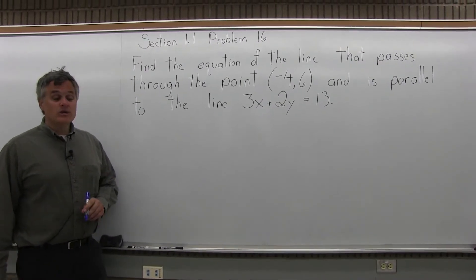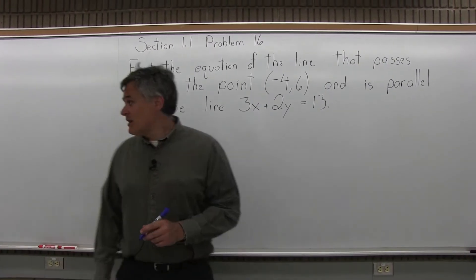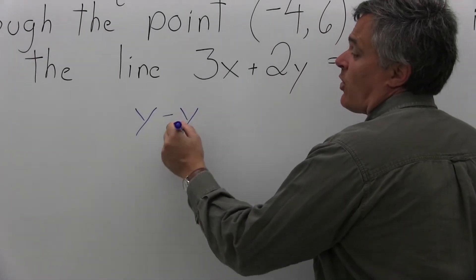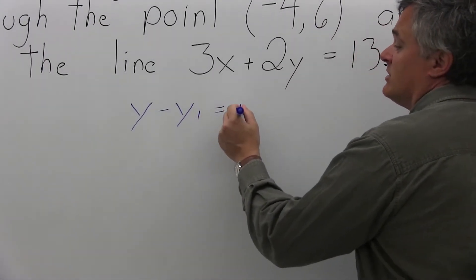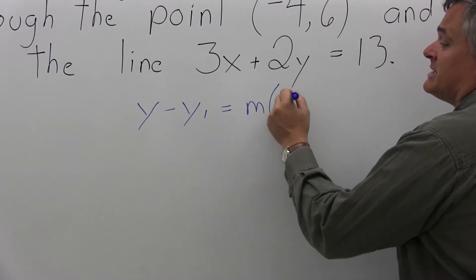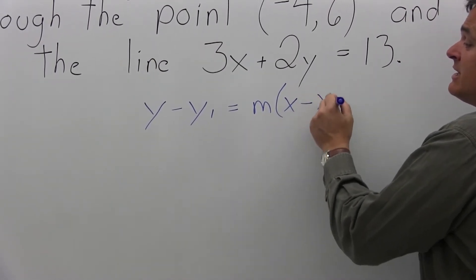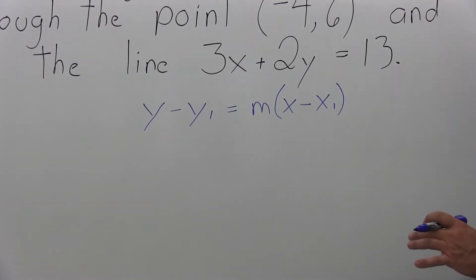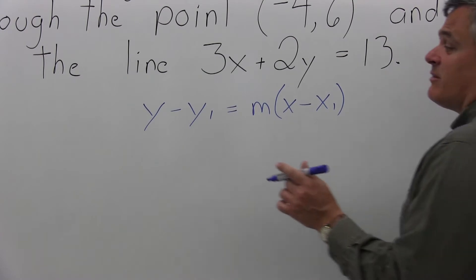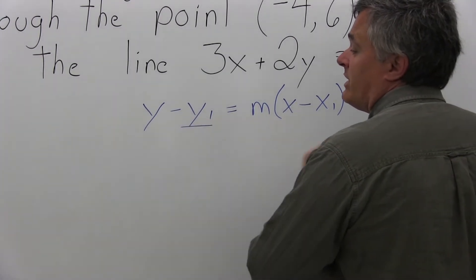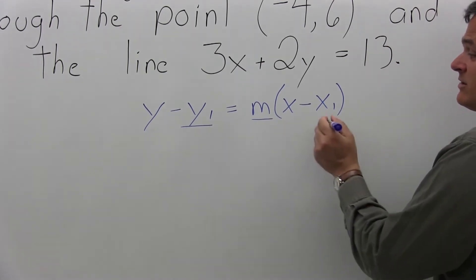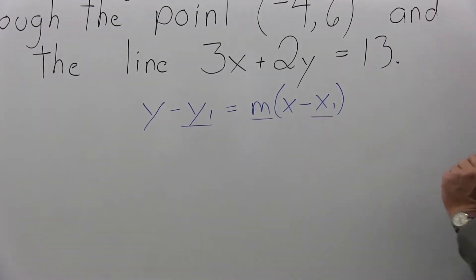When we need to find the equation of a line, we're going to use the formula y minus y1 equals m times x minus x1. Some of this equation stays in the answer and some of it you need to fill in a number value. The y1 needs a number value, the m needs a number value, and the x1 needs a number value. The rest will stay.